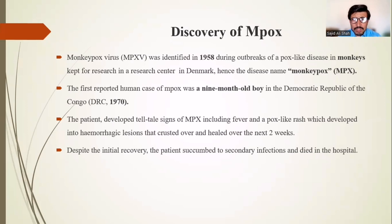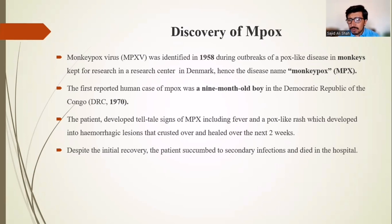The first reported human case of mpox was a nine-month-old boy in the Democratic Republic of Congo in 1970. The patient developed telltale signs of mpox, including fever and a pox-like rash which developed into hemorrhagic lesions that crusted over and healed over the next two weeks. Despite initial recovery, the patient's symptoms worsened due to secondary infections, and he died in hospital.